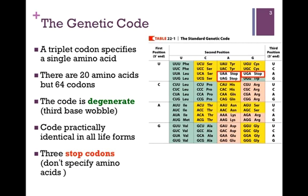The genetic code is a series of triplet codons, each of which specifies a single amino acid. There are 20 common amino acids, but there are 64 codons. We say, therefore, that the code is degenerate.